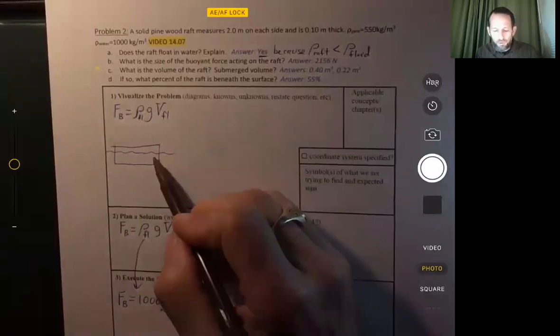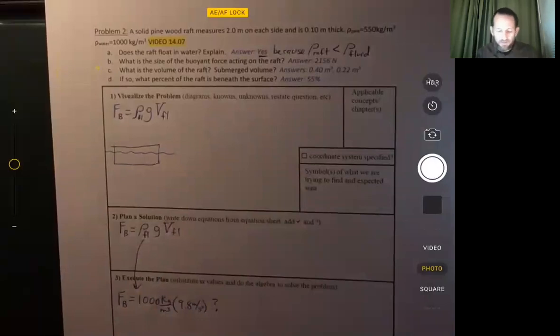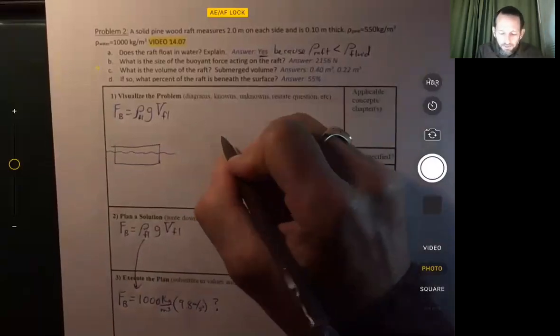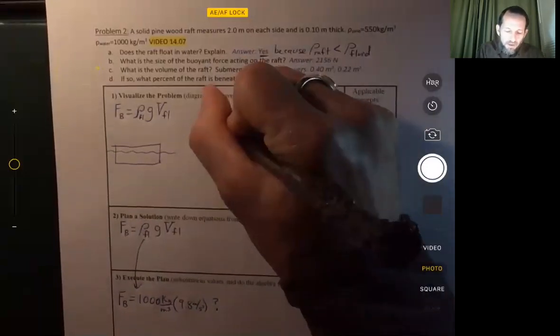Hmm. Oh, well, we don't know how much of the raft is below the water. And so we can't actually do that. So don't know. All right. So we can't do it that way. And we go back and we think about, all right, well, what about drawing a free body diagram?